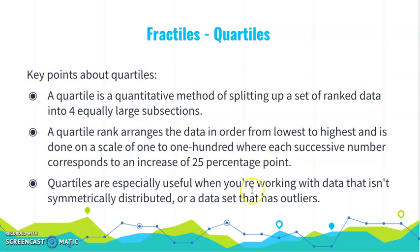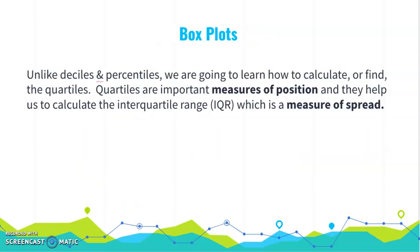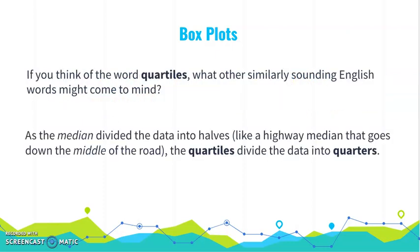A couple of key points about quartiles. Again, to calculate your quartiles, we have to have our data from lowest to highest and then split it up into four equal parts. Each increase represents 25% increase. We're especially going to use quartiles and they're most helpful when your data is not symmetric or you have outliers. Unlike deciles and percentiles, we're going to actually practice calculating quartiles and using them. They're an important measure of position as they help us calculate the interquartile range, which is a measure of spread, and we're going to discuss that later.